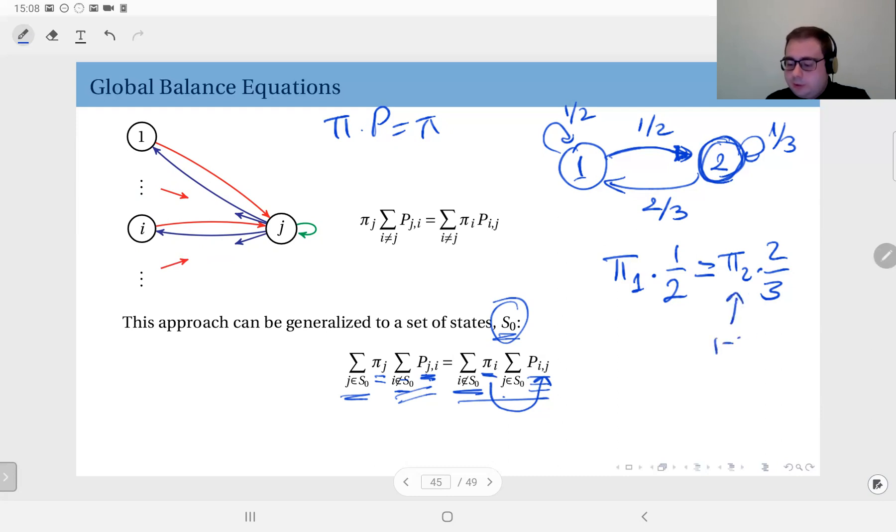So I can obtain π₁/2 equals 2/3 minus 2π₁/3. If you put that on the left hand side, you have 1/2 plus 2/3 π₁ equals 2/3. This is 7/6 π₁.